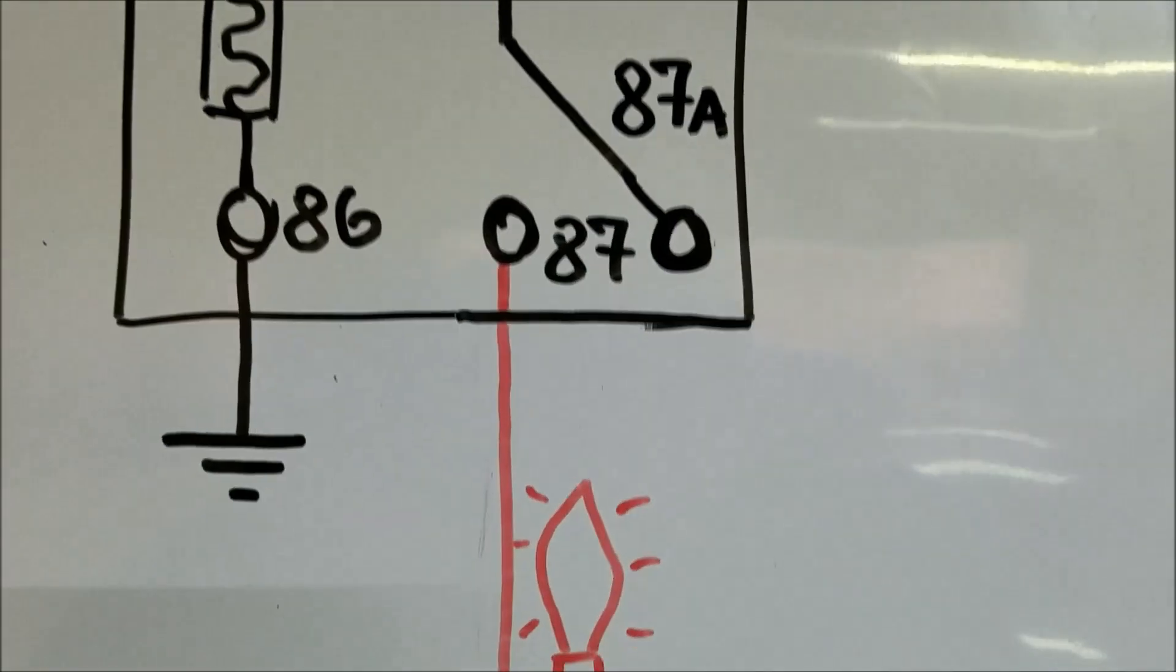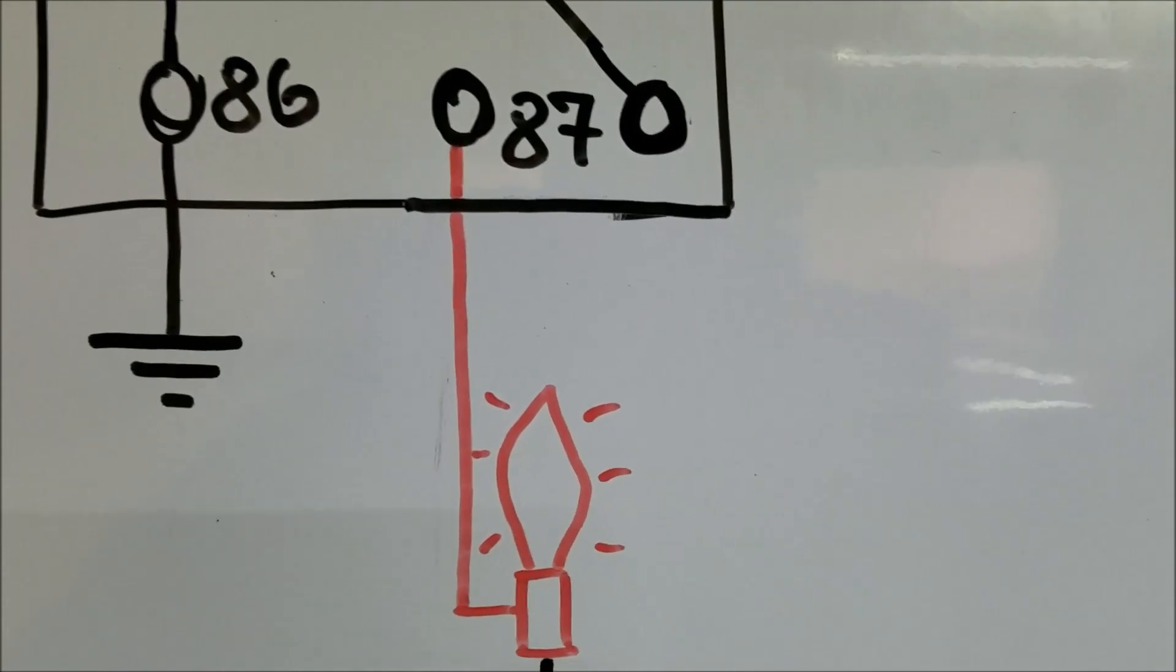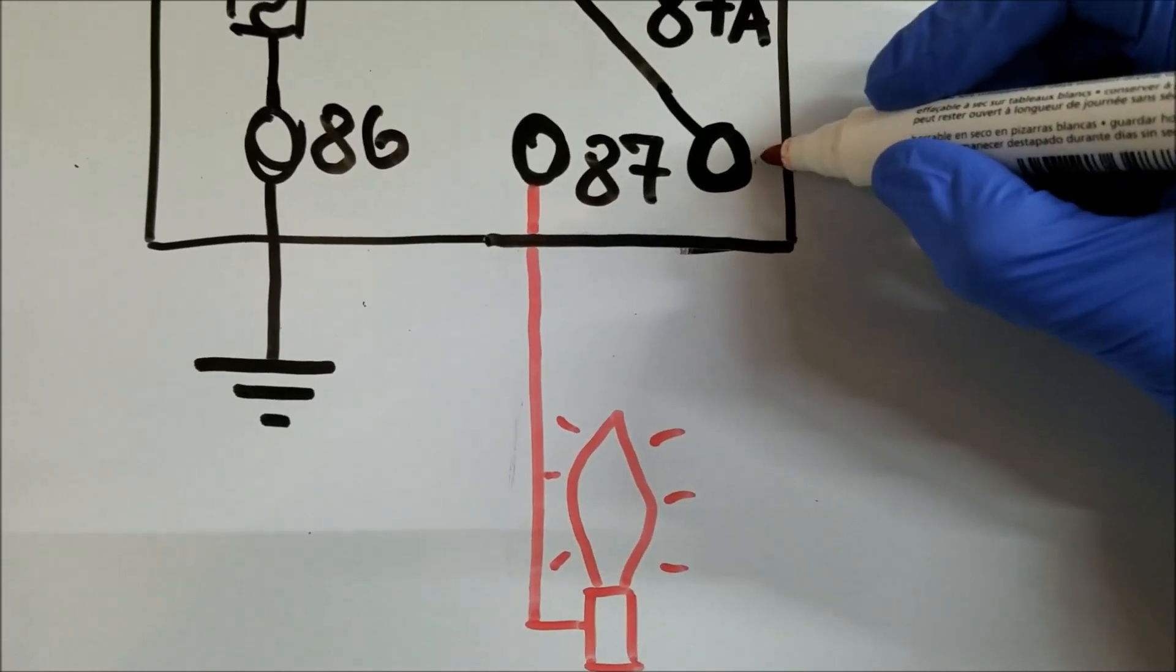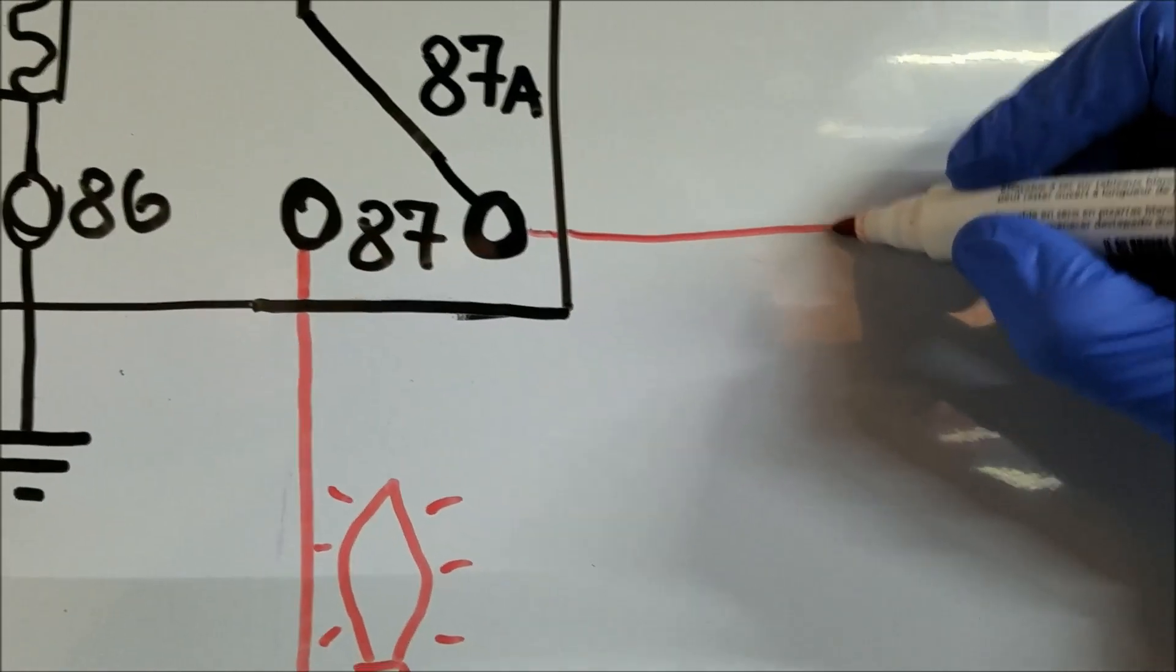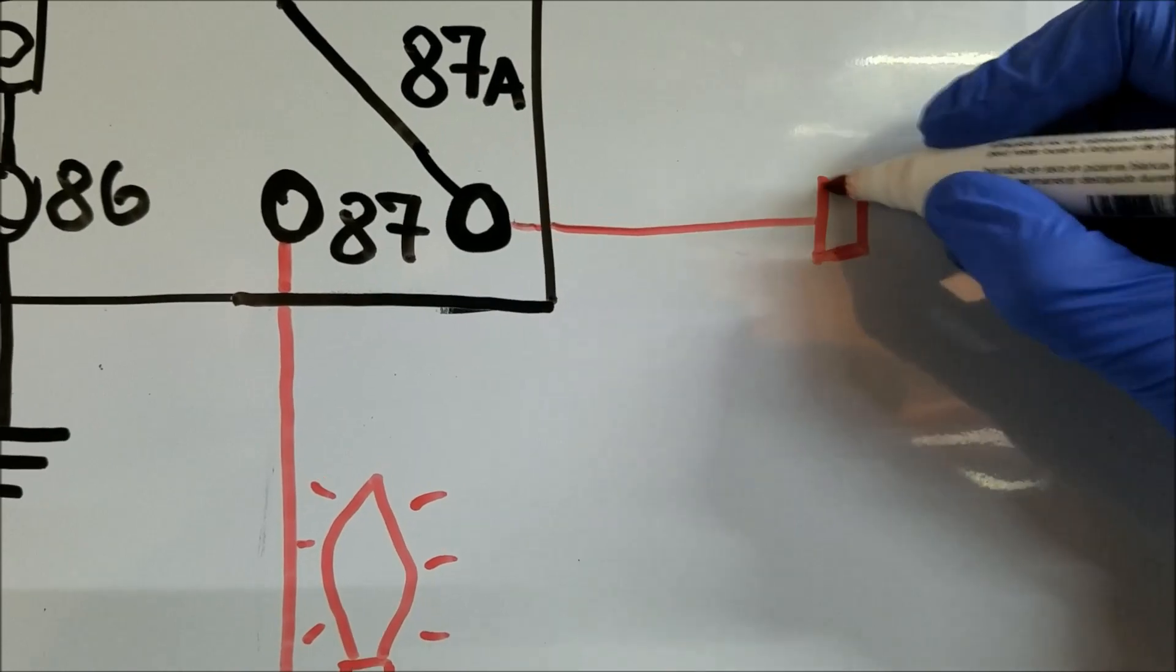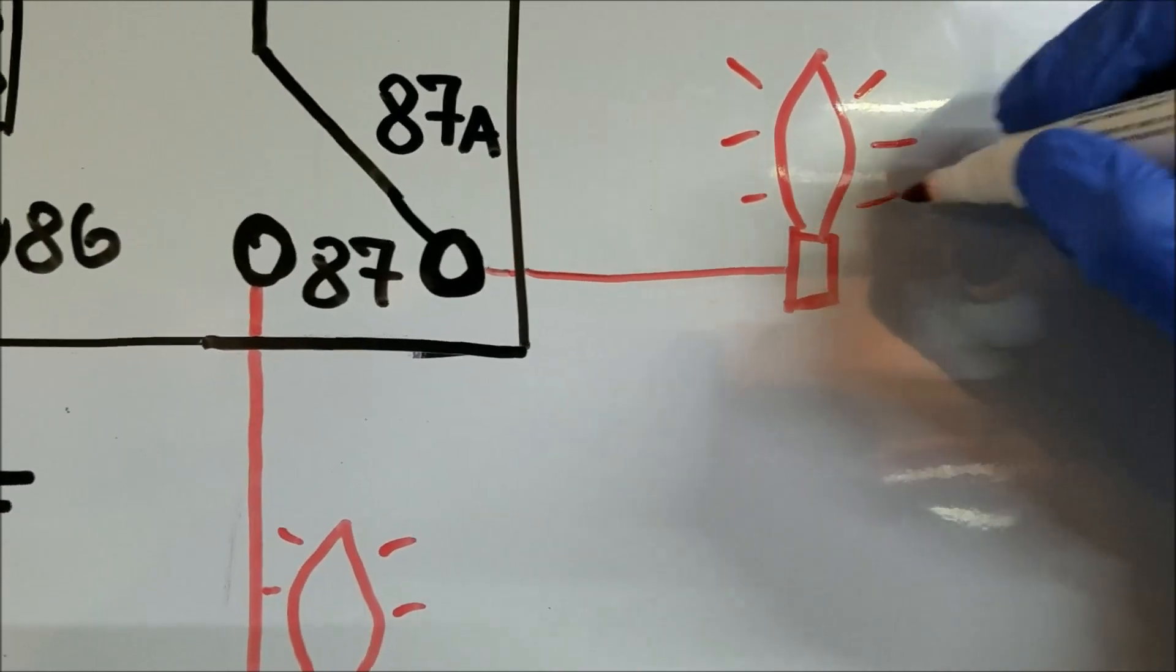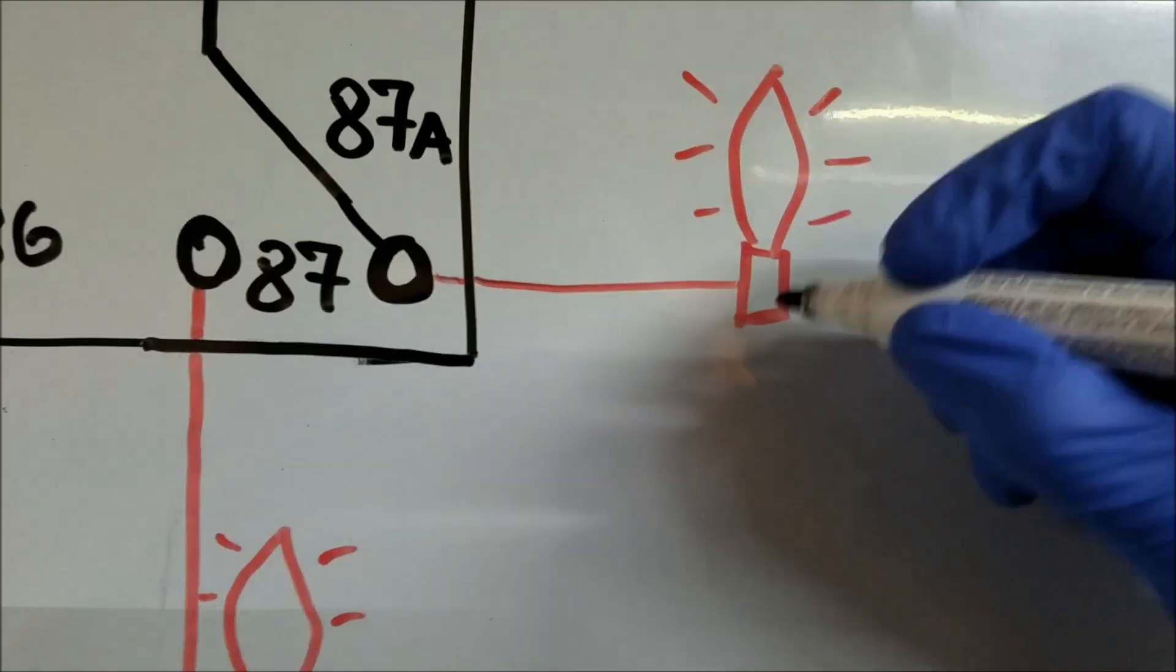A great example for this would be basically the headlight circuit. The relay would be used to power low beam headlights, for example, until we activate the switch which turns on the electromagnet, which in return sends the current to the high beam headlights.